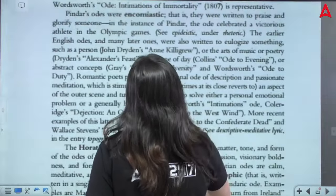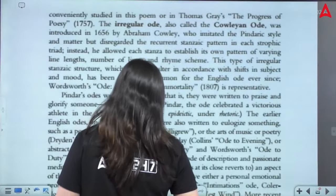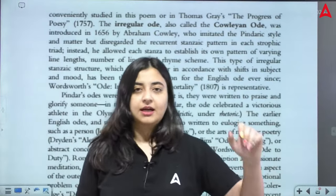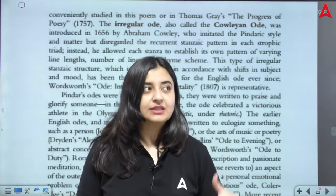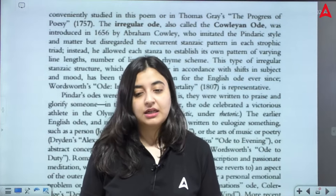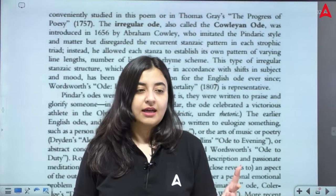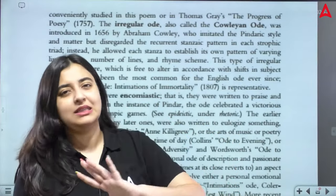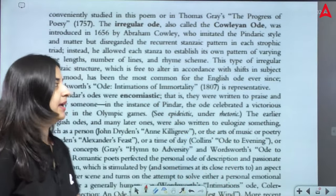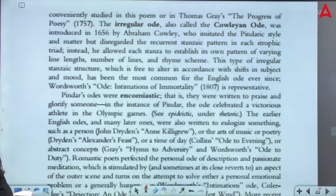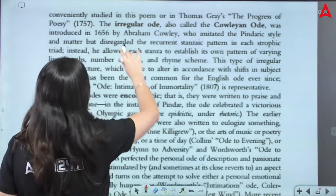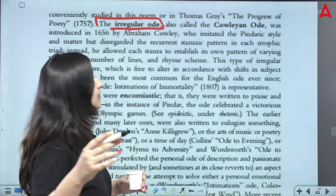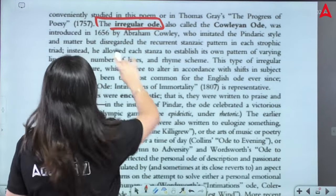The regular ode became less common. People said they would pick up the ode's material — talk about some subject matter in an elevated style and respect it — but would not follow that typical three-stanza structure. In that regard, they started the irregular ode in English literature. These were popularized by Abraham Cowley in 1656 — that's why they also call them Cowleyan odes. They had to imitate Pindar's style, but his stanzaic pattern was disregarded.